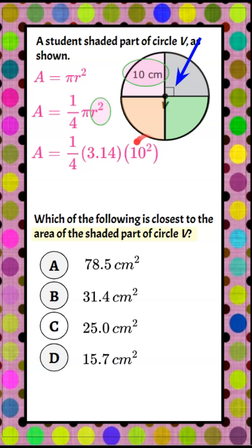Using our calculator or mental math, 10 squared is 100, which makes this 314. Divide by 4 gives you 78.5 centimeters squared, which is answer choice A. So one-fourth of circle V is 78.5 centimeters squared.